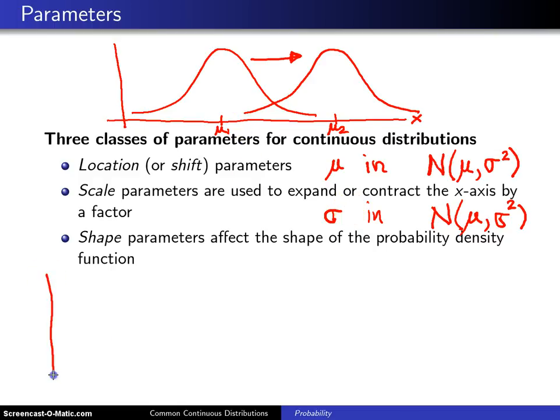Here is a second example of a scale parameter. Here is x and f(x). One of the distributions that's going to be introduced in this chapter is the exponential distribution. Here is a picture of the exponential distribution. It turns out if you let me choose the scale for this x axis, then every single exponential distribution that's out there will have a PDF that looks like this.